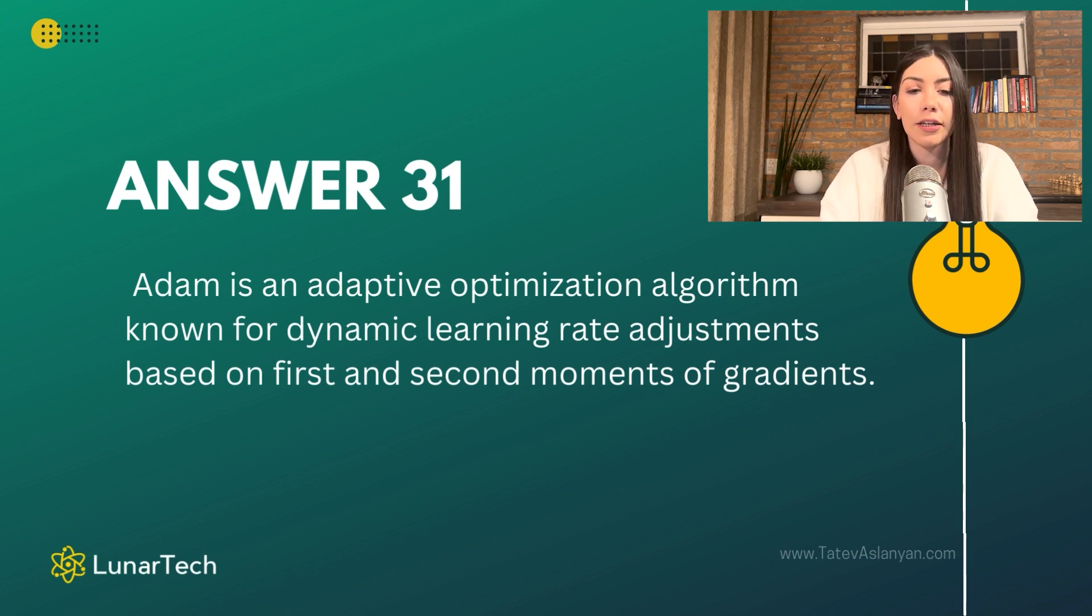What Adam tries to do is bring the benefits of two different algorithms together. It tries to combine the idea of momentum from SGD with momentum with the idea of RMSProp by using the running average of the second-order derivative, the second moment, and by combining the two, it takes the benefits of these two worlds.